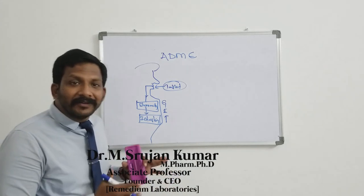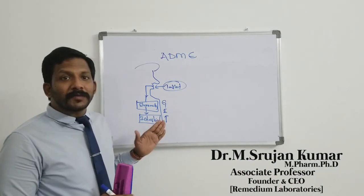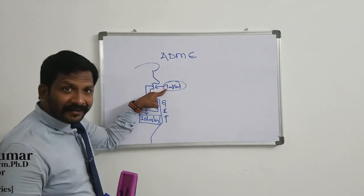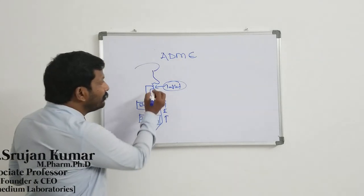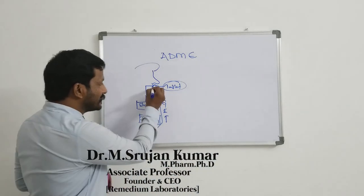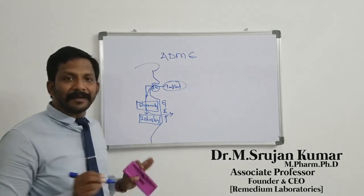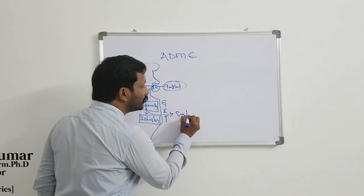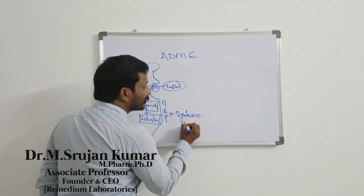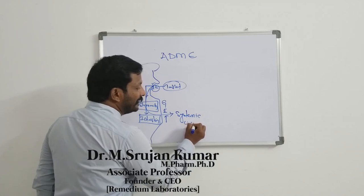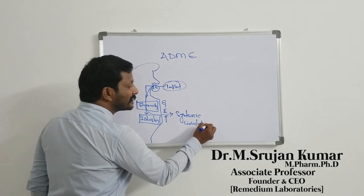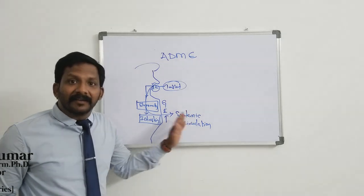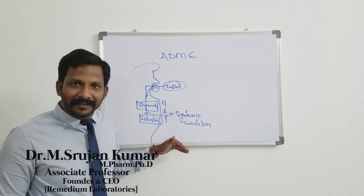So can you define absorption now? Absorption is the process of movement of unchanged drug from the site of administration to systemic circulation. When will it enter into systemic circulation? When it passes through the barrier — the GI barrier.